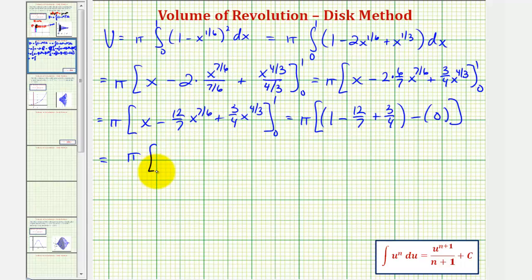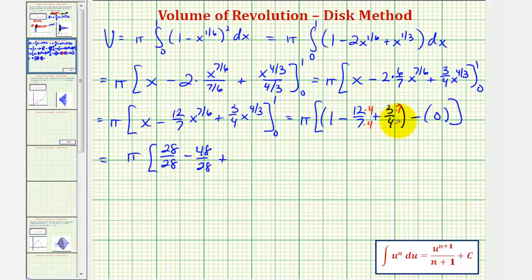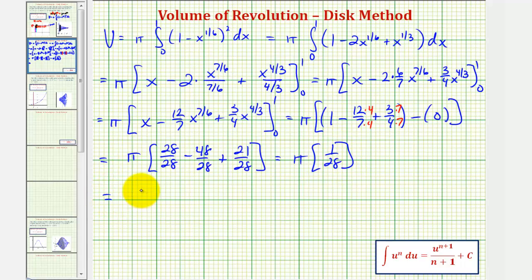So we have pi times the quantity one minus twelve-sevenths plus three-fourths. The least common denominator is twenty-eight: one equals twenty-eight twenty-eighths, twelve-sevenths times four over four equals forty-eight twenty-eighths, and three-fourths times seven over seven equals twenty-one twenty-eighths. This gives pi times twenty-eight twenty-eighths minus forty-eight twenty-eighths plus twenty-one twenty-eighths, which simplifies to pi over twenty-eight cubic units. The decimal approximation is approximately 0.1122.